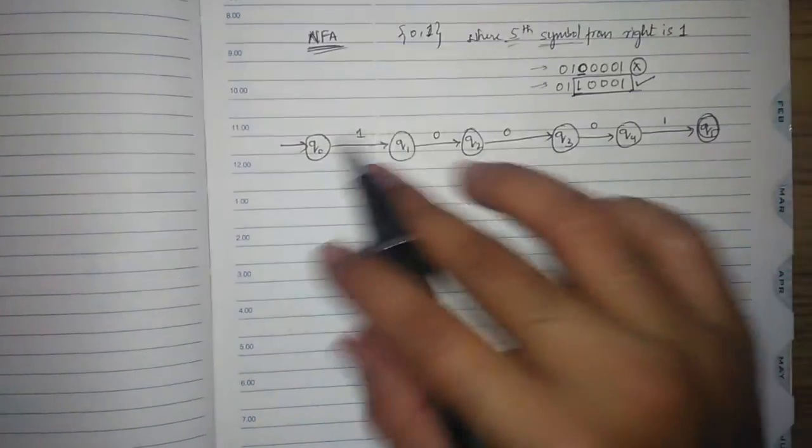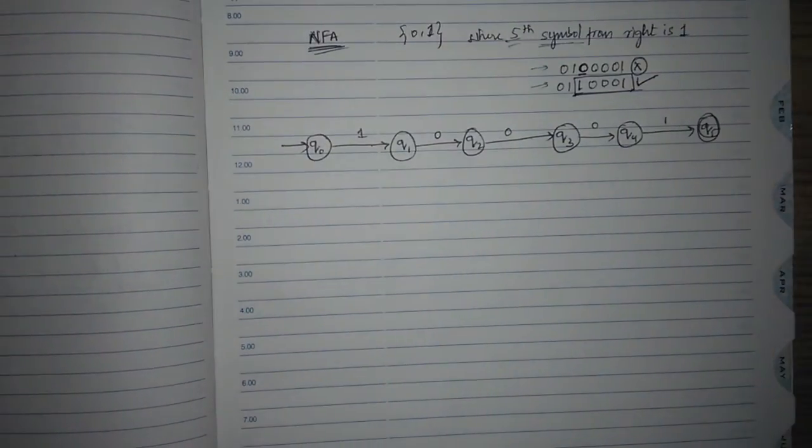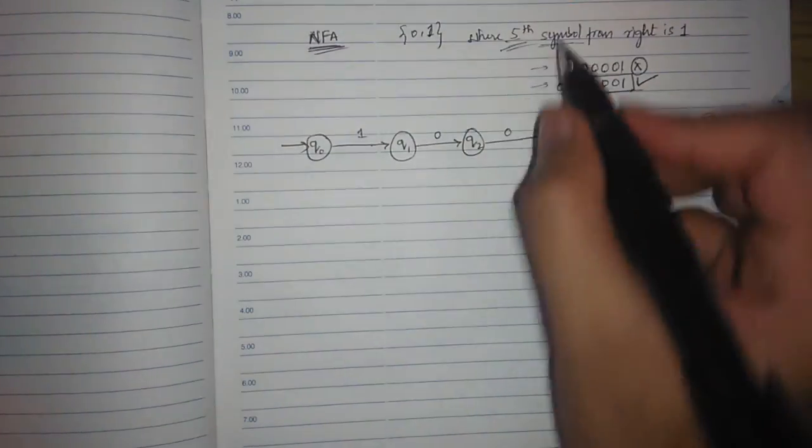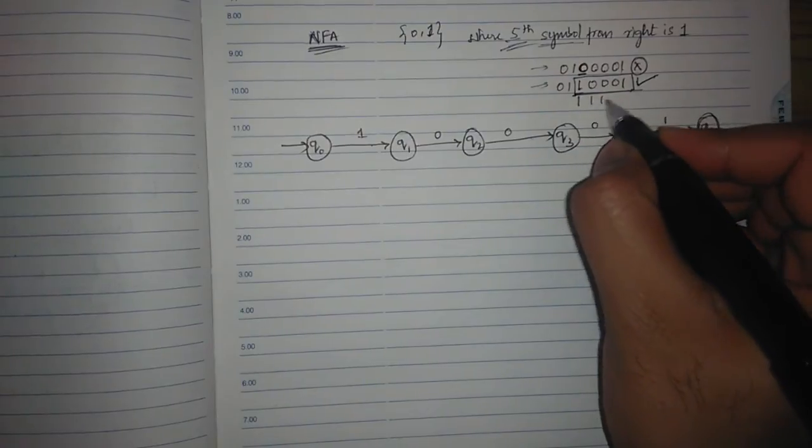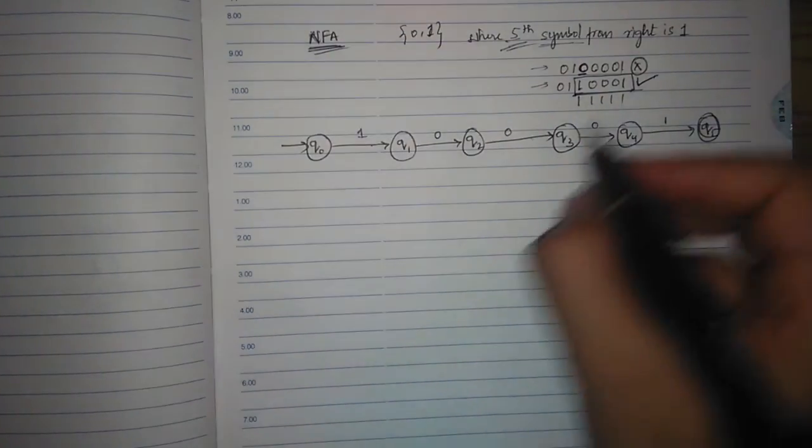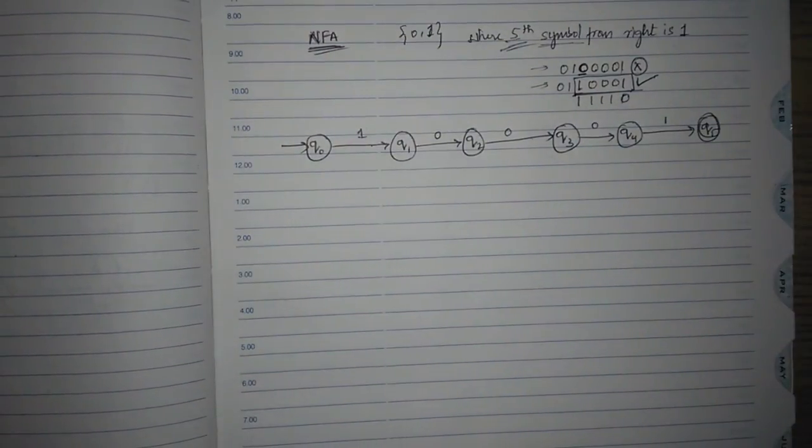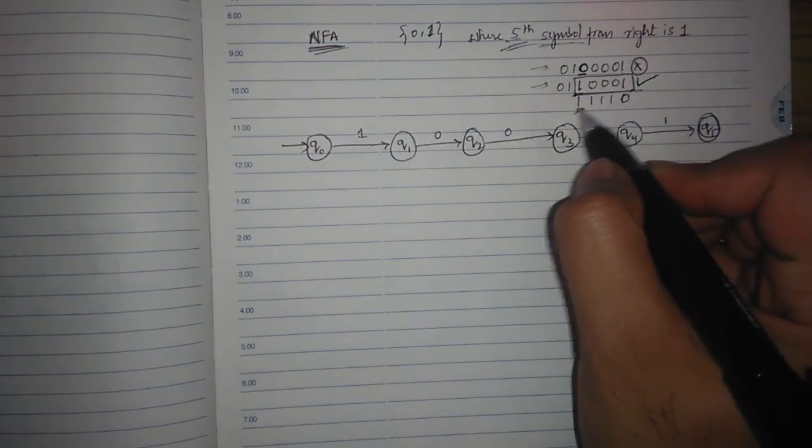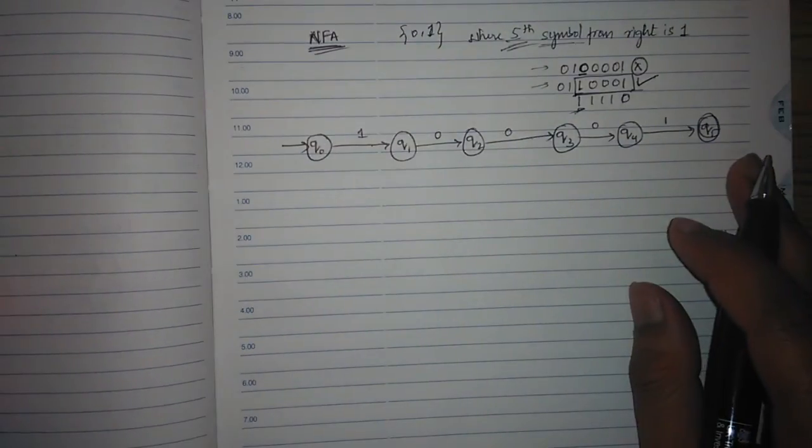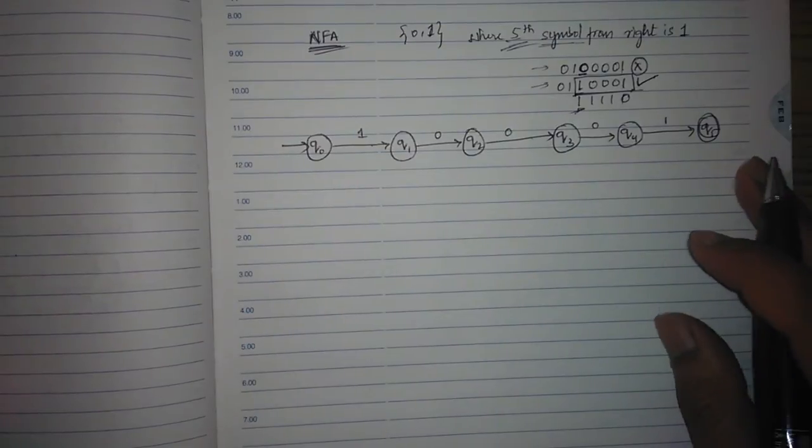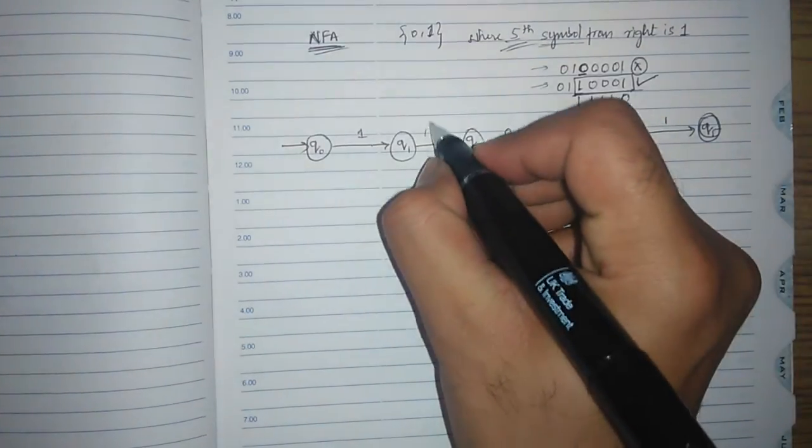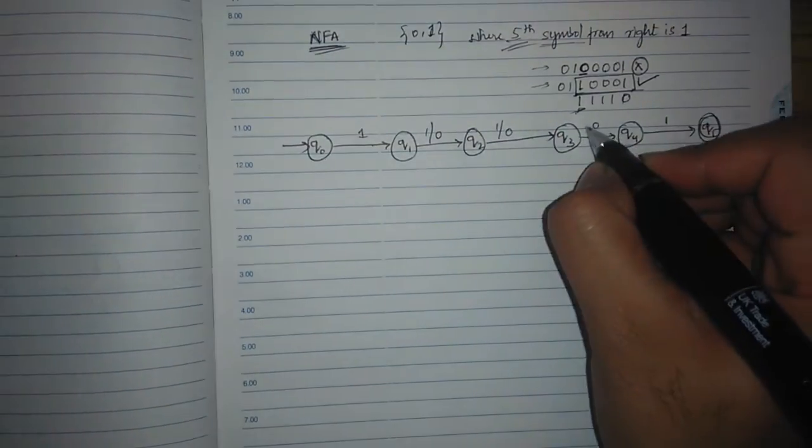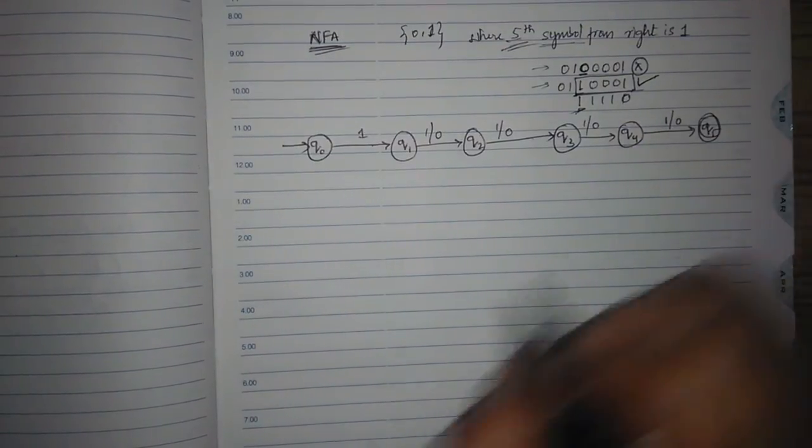Now this also means that I can accept this only, the fifth symbol from right will be 1. So what we have to do for this NFA is we have to accept 1, 0 here, 1, 0 here, so we have to accept 1, 0 at each state. Correct.